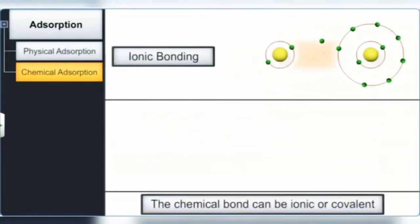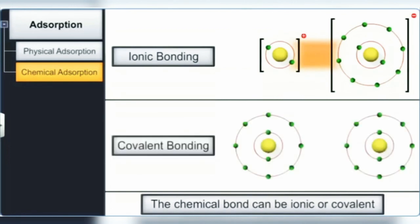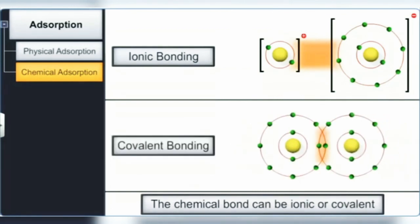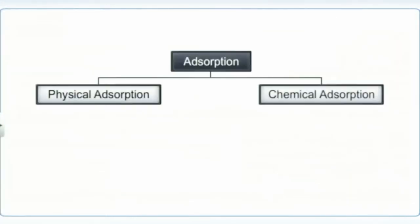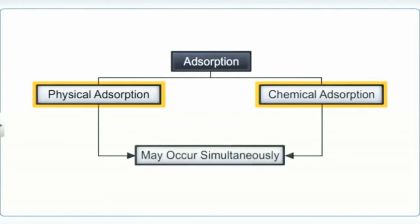The chemical bond can be ionic or covalent in nature. In some cases, both physical and chemical adsorption may take place at the same time, and it may not be possible to identify the type of adsorption.